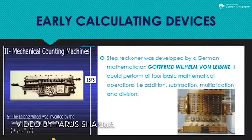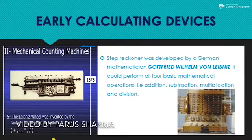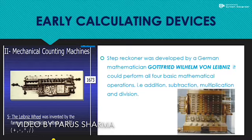Then we have another mechanical counting machine — that is the Step Reckoner. It was made by Gottfried von Leibniz in 1692. It can perform all four basic mathematical operations: addition, subtraction, division, and multiplication.